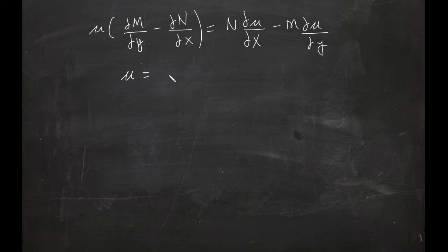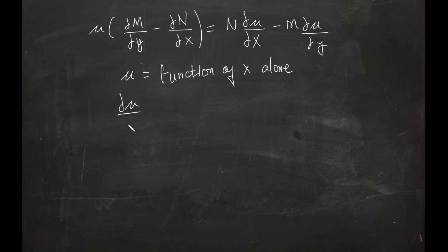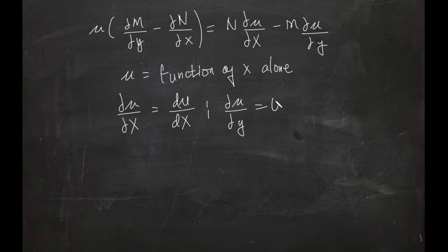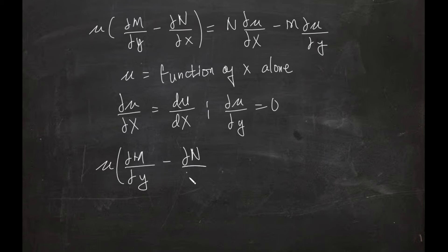Now let's say that mu is a function of x alone. Then the partial derivative of mu with respect to x becomes the ordinary derivative of mu with respect to x, and the partial derivative of mu with respect to y is equal to zero because it is a function of x alone. Therefore this term becomes zero, and our equation becomes mu times (partial derivative of M with respect to y minus partial derivative of N with respect to x) is equal to N times d(mu)/dx.